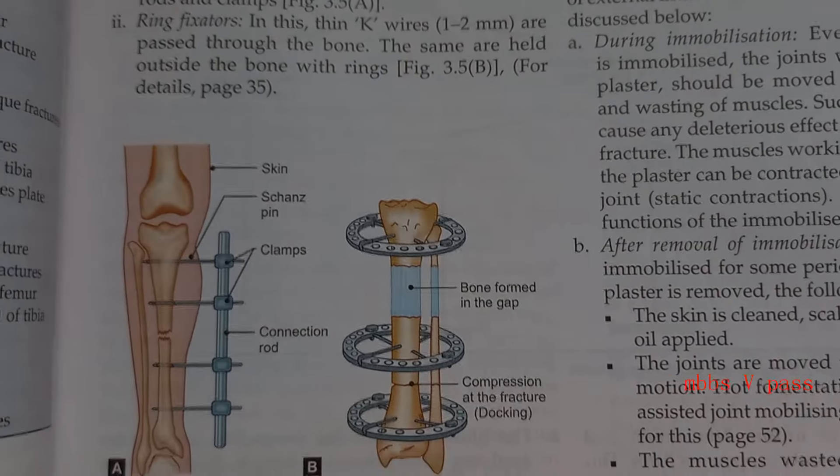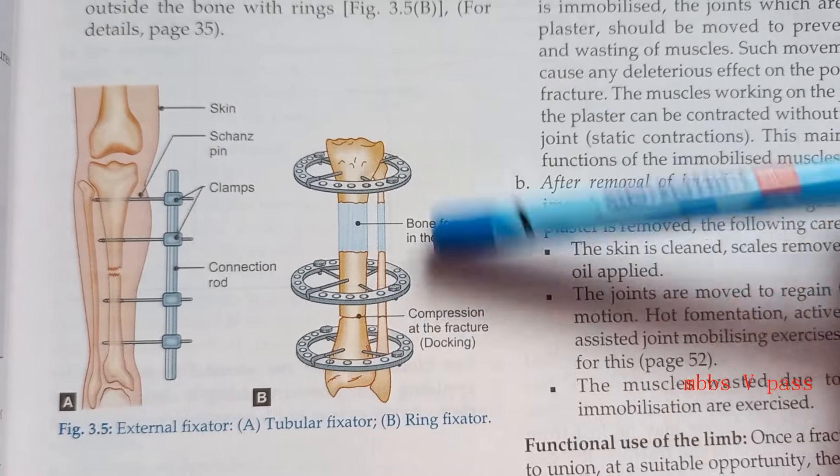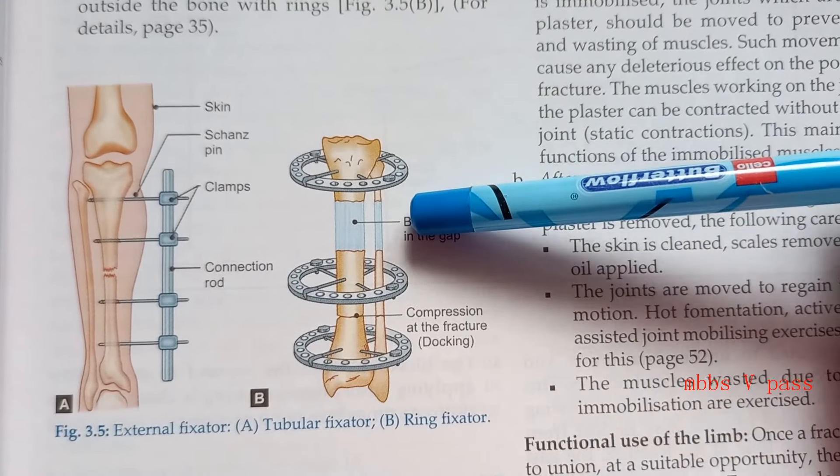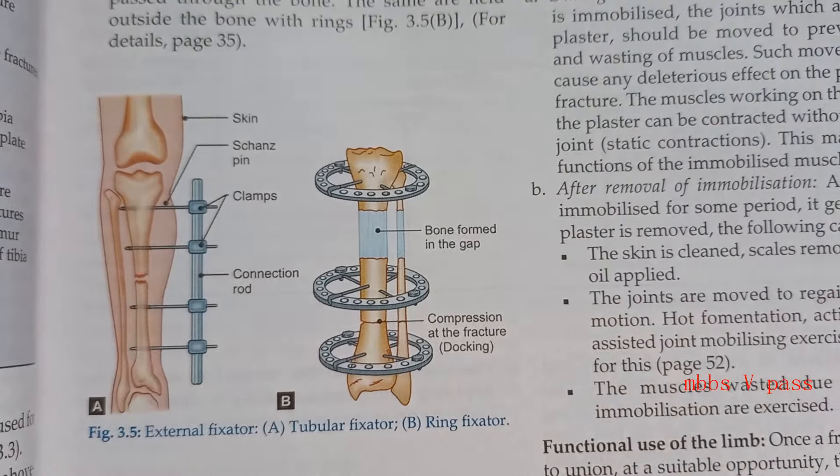Let's make it interesting and look at some spotters. What do you think this is? The fracture is here, but they cut the bone on top and push it down so that the two parts will unite, and new bone will form here. Which technique is this? This is external fixation — if I'm not wrong, this is Ilizarov's technique.